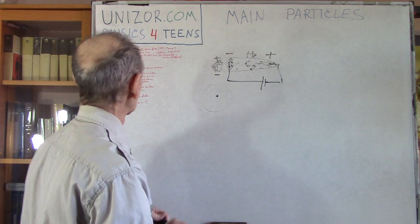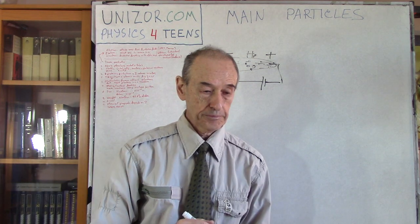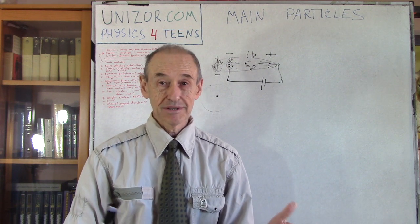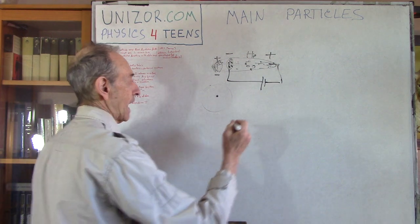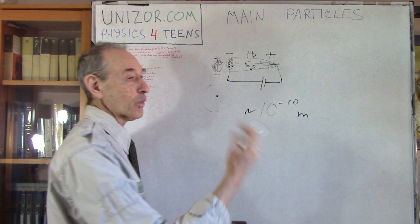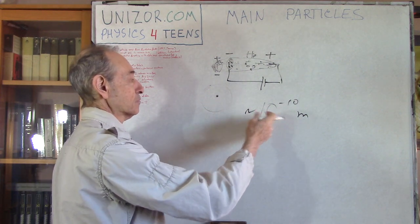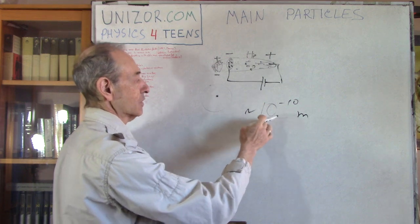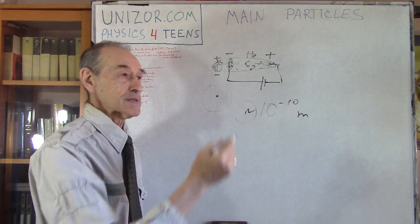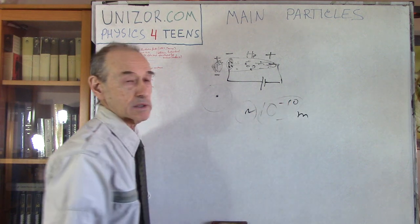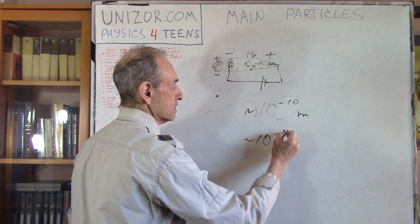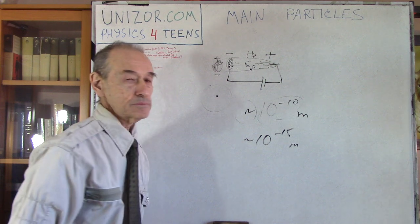What's also interesting is that experiments show that atom is practically empty, so to speak. The size of the atom is about 10 to the minus 10 meters. I put this order of which means it can be 1.0 or can be 5.0 times this multiplier but anyway it's some relatively small multiplier, let's say from 1 to 9 something like this, times 10 to the minus 10 meters whereas the nucleus has 10 to the minus 15 meters.